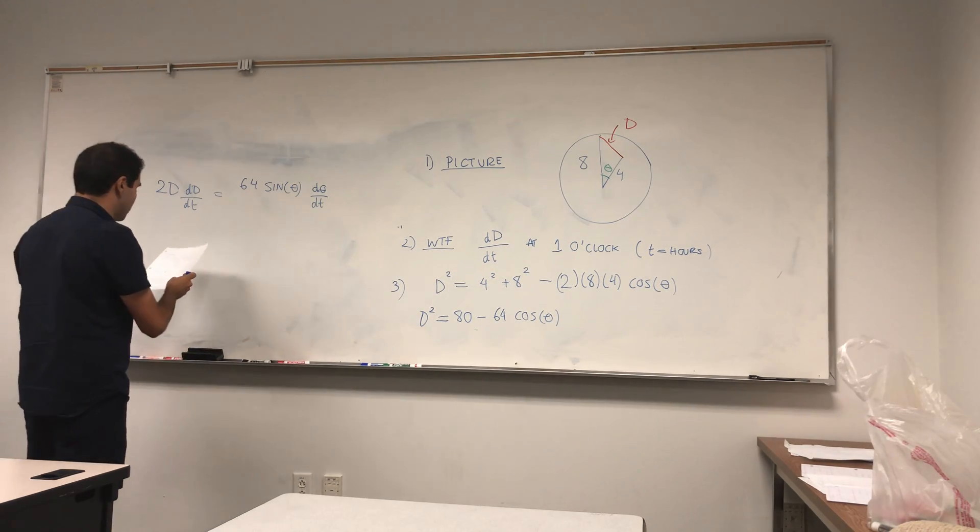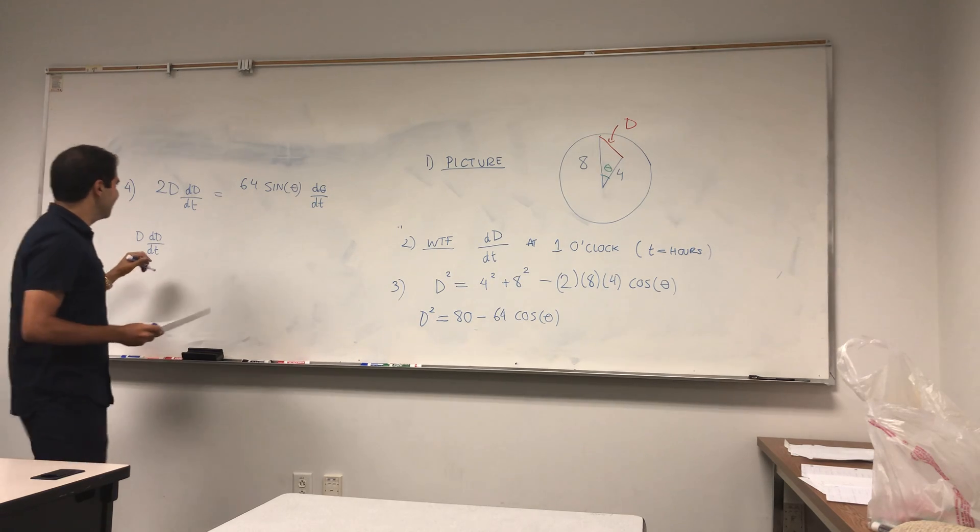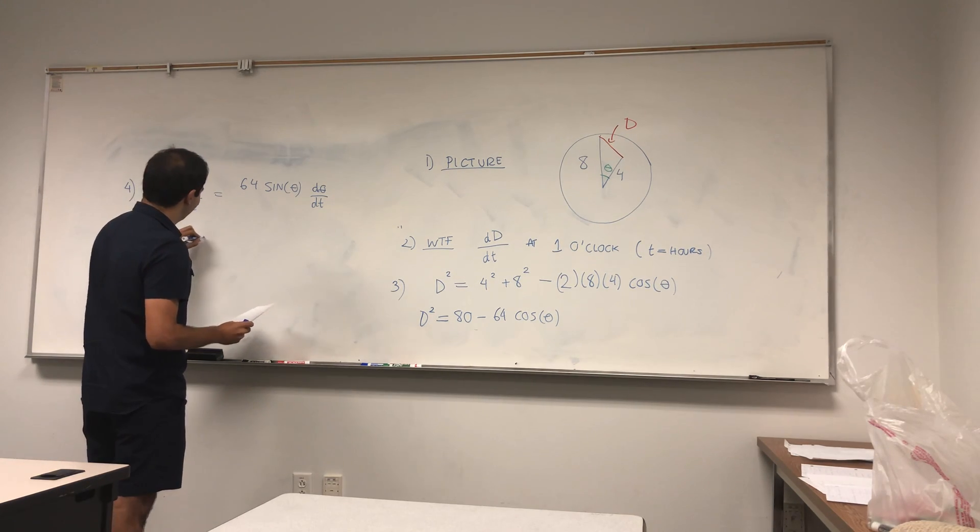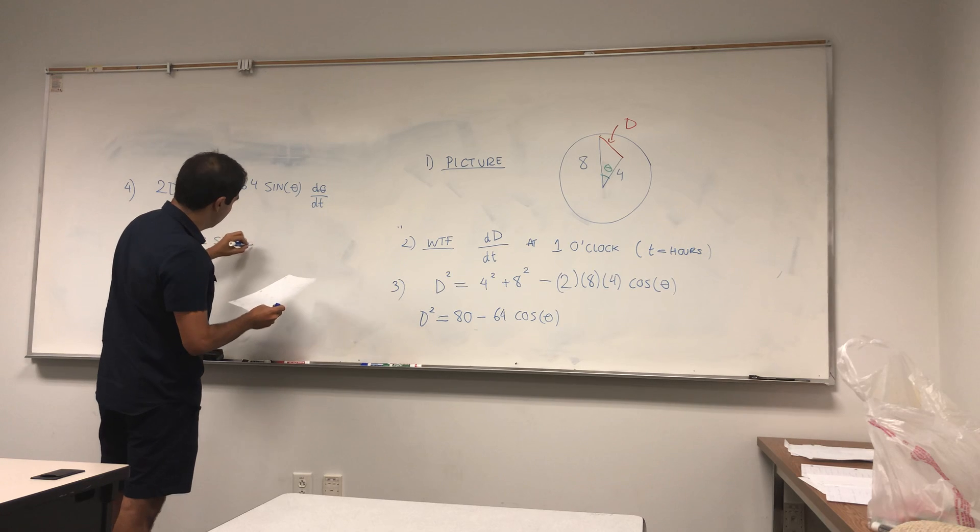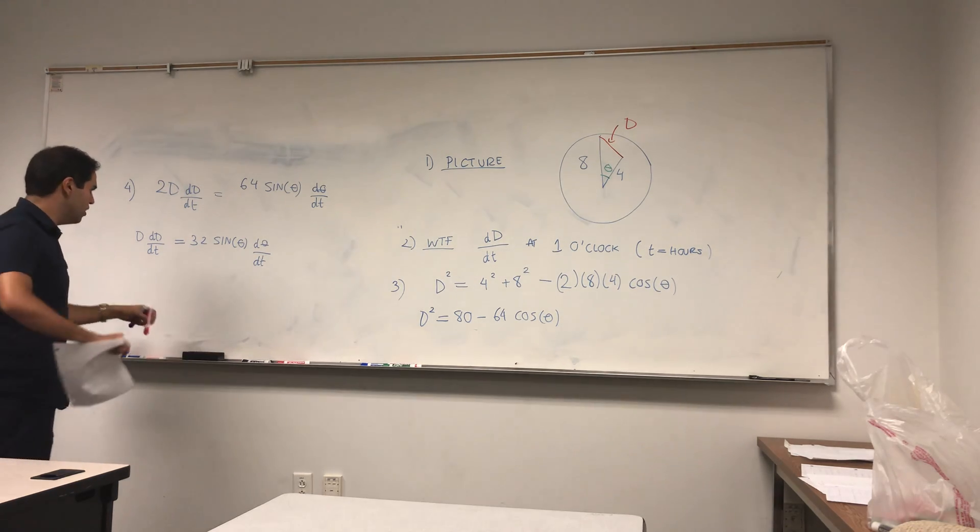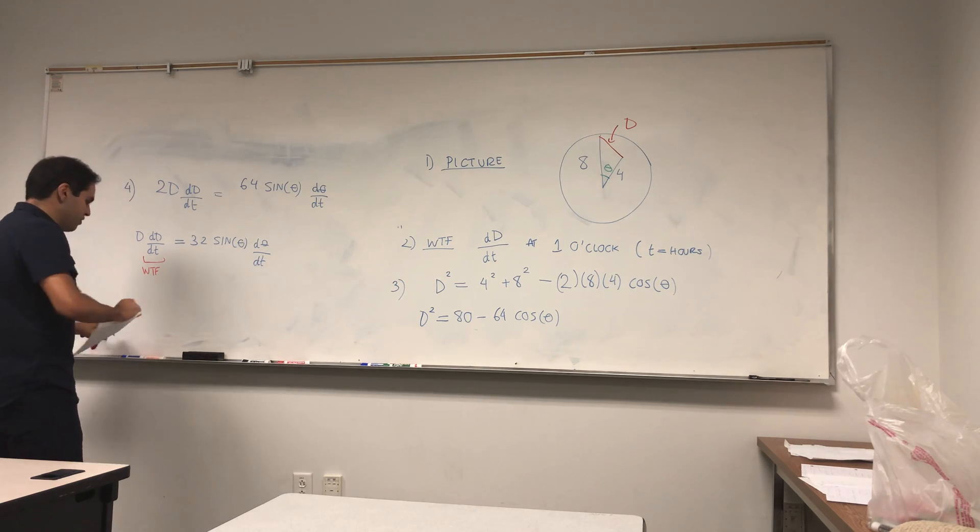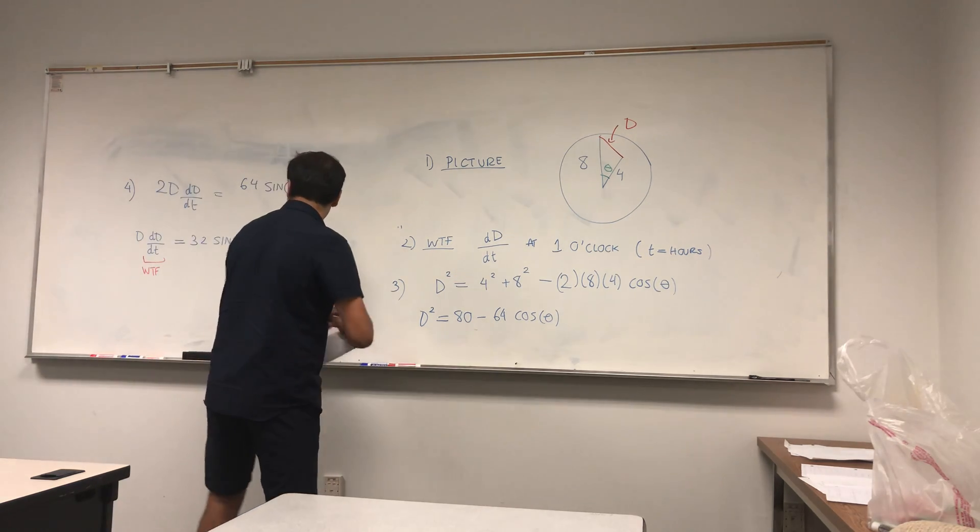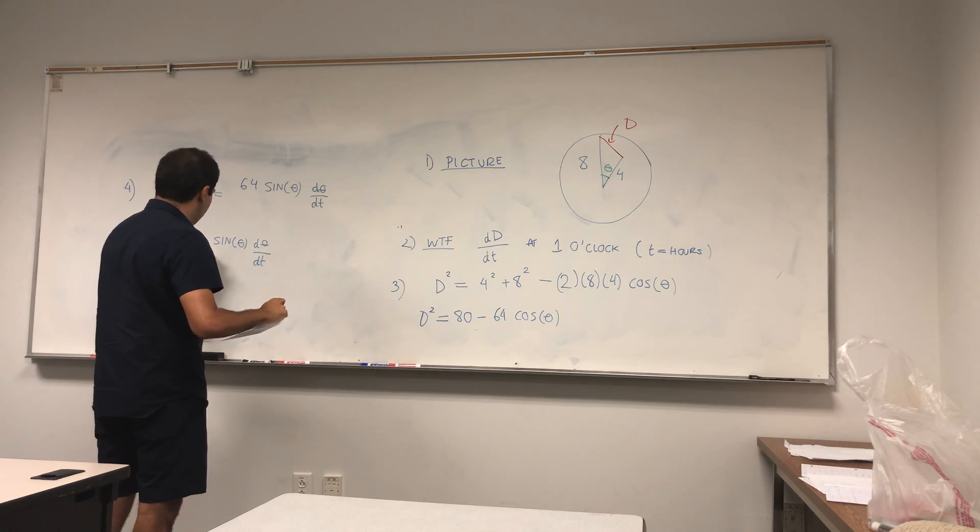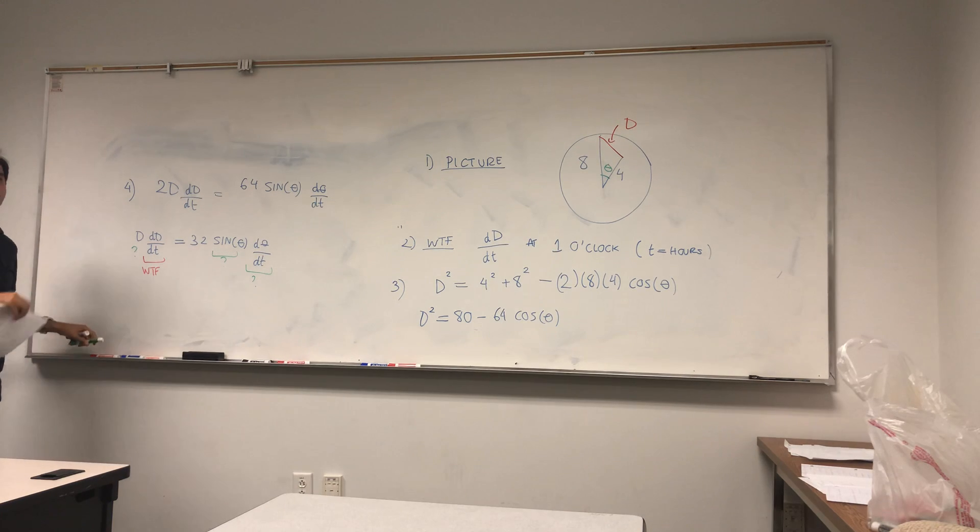Okay, let's clean this up a little bit. So just divide by 2, dD/dt equals 32 sine of theta d(theta)/dt. And the question is, again, we want to find that, and we need to find three things really to solve this related rates problem. We need to find D, we need to find sine of theta, and we need to find d(theta)/dt. Once we have those three ingredients, we're good.